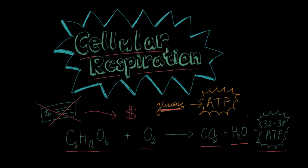Before we discuss the steps of cellular respiration, we need to balance this equation. Glucose has six carbons, so we get six carbons out as CO2. There are 12 hydrogens in glucose, so we get 12 hydrogens out — meaning we place a six in front of the water molecule. Counting oxygens on both sides, we also place a six in front of oxygen. So for one glucose molecule: six oxygen molecules in, six CO2 and six water molecules out, plus 32 to 38 ATP.